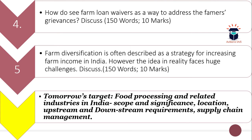The fourth question is: how do you see farm loan waivers as a way to address farmers' grievances — discuss? Here you have to focus on farm distress and farmers' grievances, and assess whether loan waivers can be effective in tackling this problem. The word limit is 150 and maximum marks are 10.